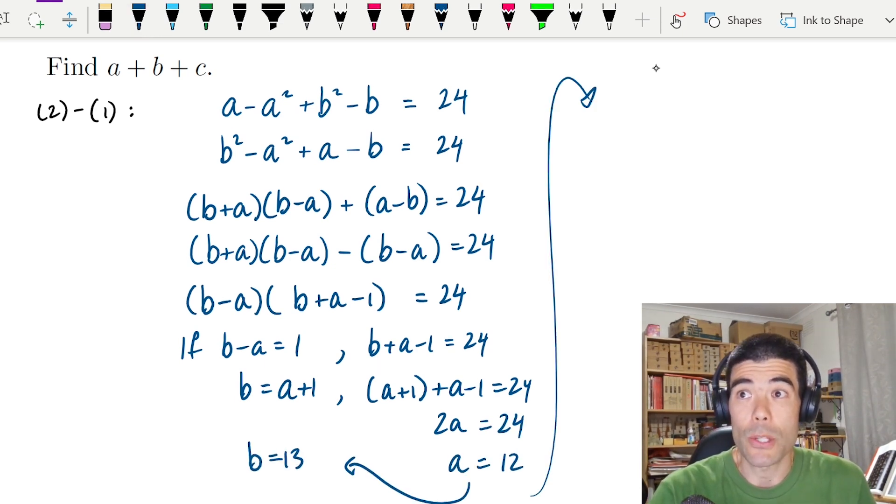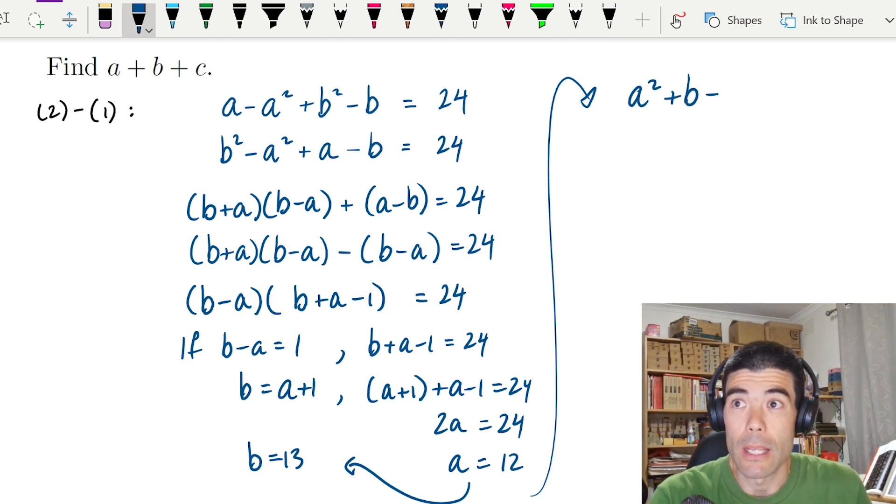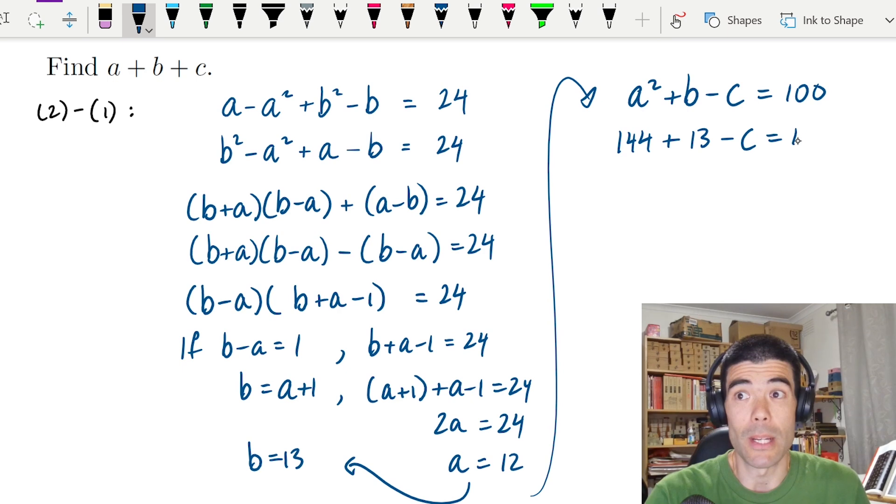Substituting them back into the first equation, a squared plus b minus c equals 100. We get 144 plus 13 minus c is 100. So c would have to be 57.